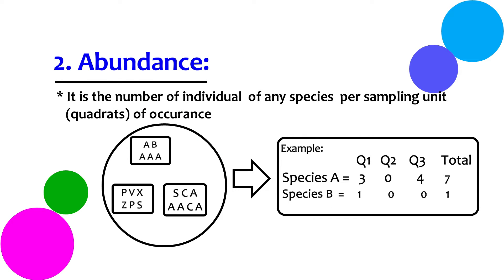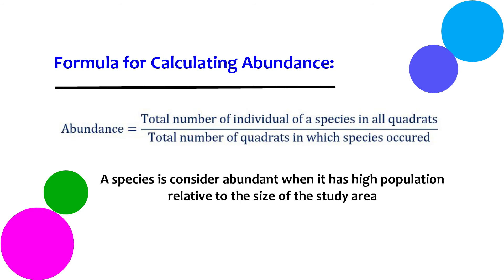Next, what does plant abundance mean? Abundance is the number of individuals of any species per sampling unit of occurrence. To calculate abundance and get the idea of which species are found in abundance in a particular area, the formula for abundance is: Abundance equals the total number of individuals of the species in all quadrats divided by the total number of quadrats in which the species has occurred.